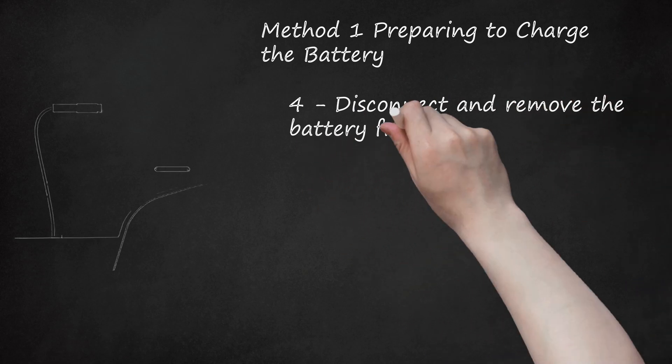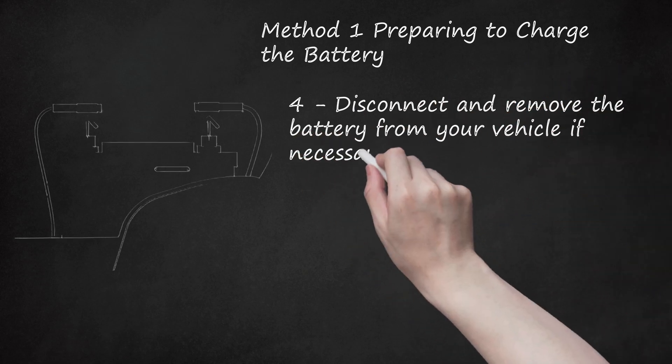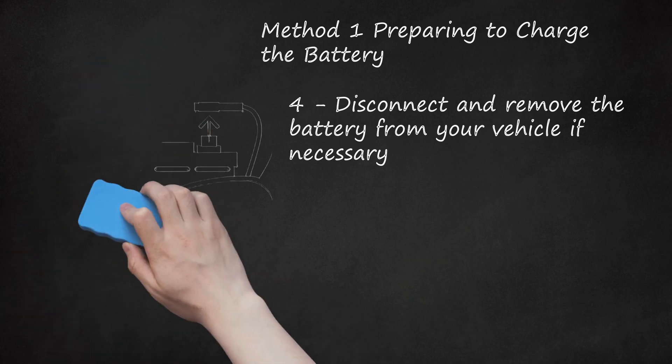Disconnect and remove the battery from your vehicle if necessary. It's important to disconnect the battery before conducting any repairs or maintenance on your vehicle. Most of the time you will be able to charge the battery without taking it out of the car, but if reaching the battery or fitting the charging cables in the engine bay or trunk where the battery is located proves difficult, remove the battery from the car completely while you charge it. If you are unsure where your battery is located, check the owner's manual for your vehicle. Some vehicles have the battery in the trunk, while most have it under the hood. Disconnect the negative terminal first, then the positive when removing a battery.